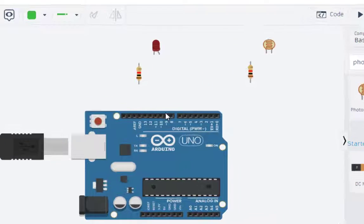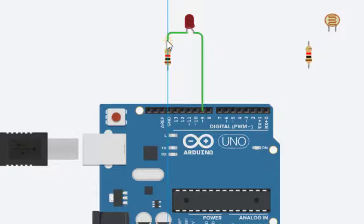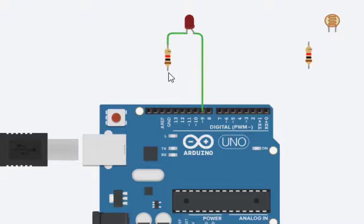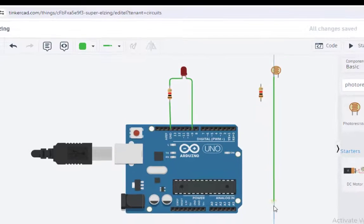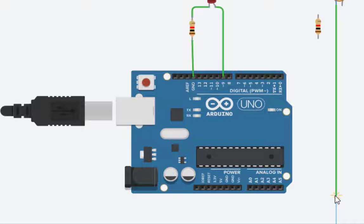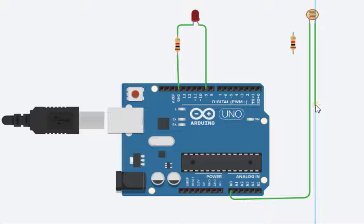Now let us do the connections. First let us connect the LED part — pin number 9 is taken and connected to the anode. The cathode of the LED is connected with the resistor and the other end of the resistor is connected with the ground. Next, for the photo resistor, terminal 1 is connected with A0, and then we connect this with the 5 volt power supply.